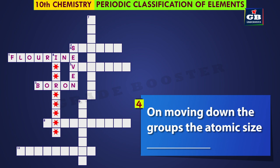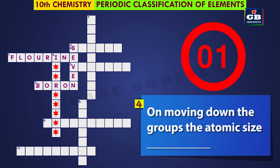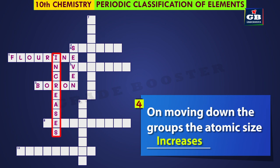Four down: on moving down the groups, the atomic size dash. Do you know what happens to the atomic size? The answer is — it increases.